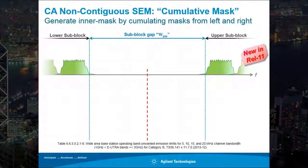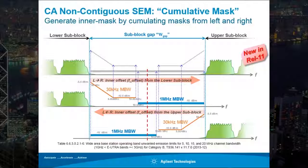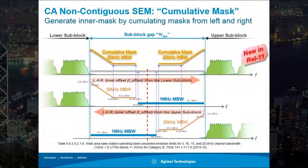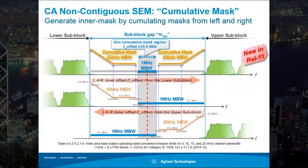Similarly, for the spectrum emission mask, the mask within a sub-block gap is calculated as the cumulative sum of contributions from the upper and the lower sub-blocks, except for offsets greater than or equal to 10.5 MHz, where the mask is non-cumulative per the definition of 3GPP.